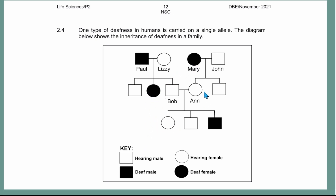Let's analyze this pedigree. We do not yet know which allele is recessive or dominant. Looking at the diagram: two parents in generation I both show the disorder, yet some of their children do not have the disorder. One of the children does have the disorder. This tells us both parents carry the allele and can pass it to their kids.